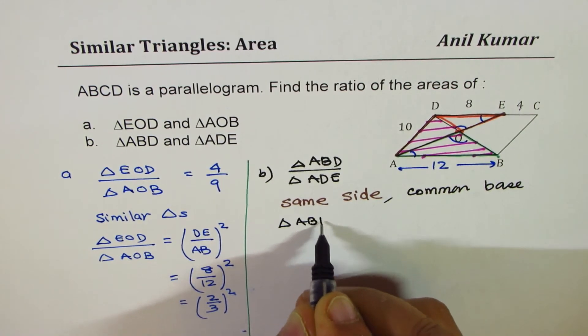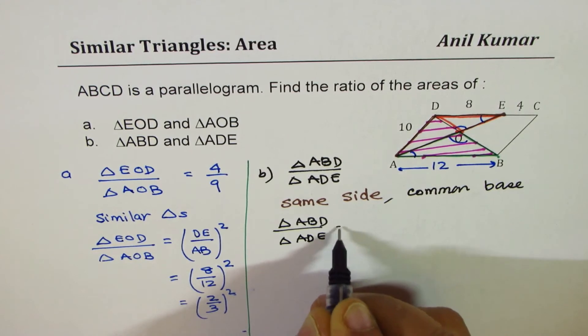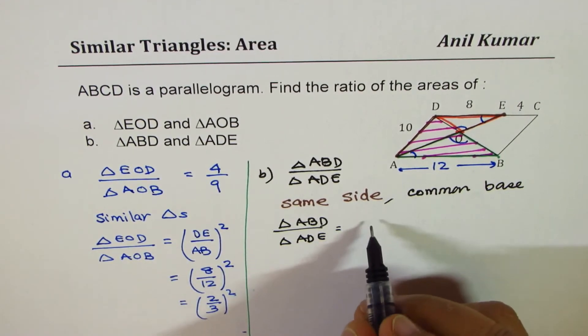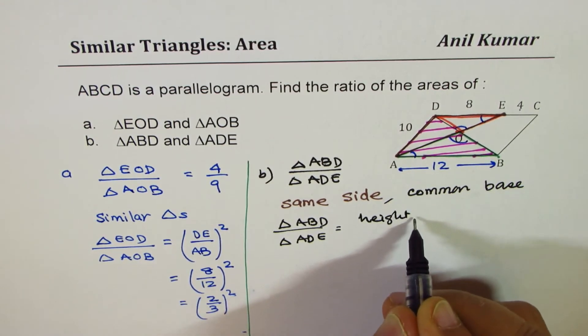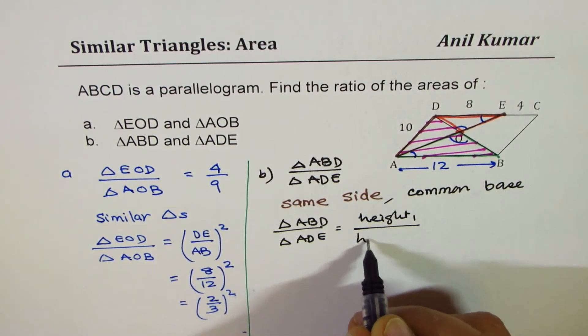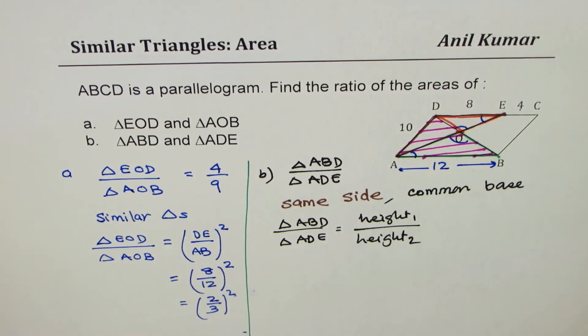So in that case, the ratio of triangle areas ABD to triangle area ADE is the ratio of their heights. So we say height ratio, so height of triangle 1 to height of triangle 2, right? That is what it is.